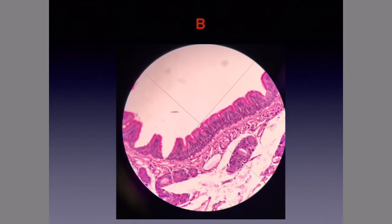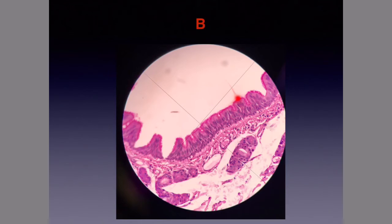Slide B. If you take a look at slide B, you can see that this appears to be columnar tissue, and then you have these nuclei at different levels that gives a false appearance of being stratified, and then you can see some ciliated pattern here on the apical surface of this tissue, so this would make this particular tissue pseudostratified columnar epithelial tissue.